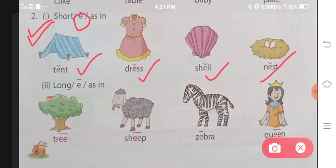We will compare this with the long E sound. Let's read this part. Tree. Tree. Sheep. Sheep. Zebra. Zebra. Queen. Queen. We pressed the E sound very long. That is your long sound. In short, we gave it a short sound. These are the long and short sounds of E.